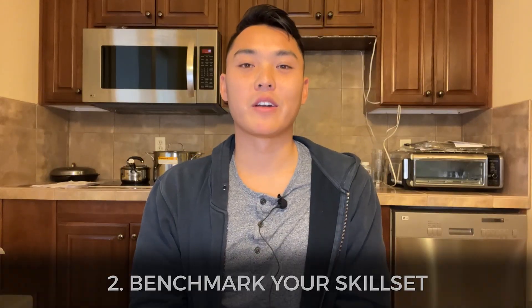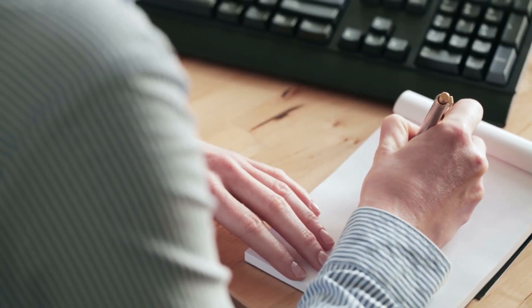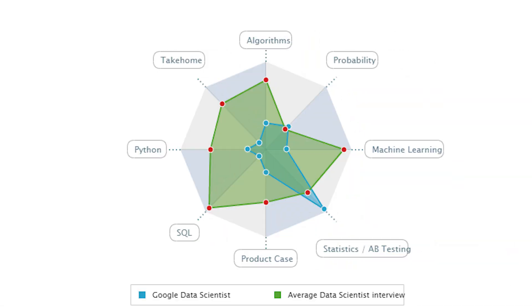Step two is benchmarking your skill set. Once you've figured out which topics will be covered across your interviews, it's time to assess your familiarity with those question topics. Create a list of question topics ordered by importance across all the interviews. For example, if I'm studying for Google and Amazon data scientist interviews, I would prioritize statistics and A/B testing, then data structures and algorithms, then machine learning and SQL, with some probability questions rounding it all out.